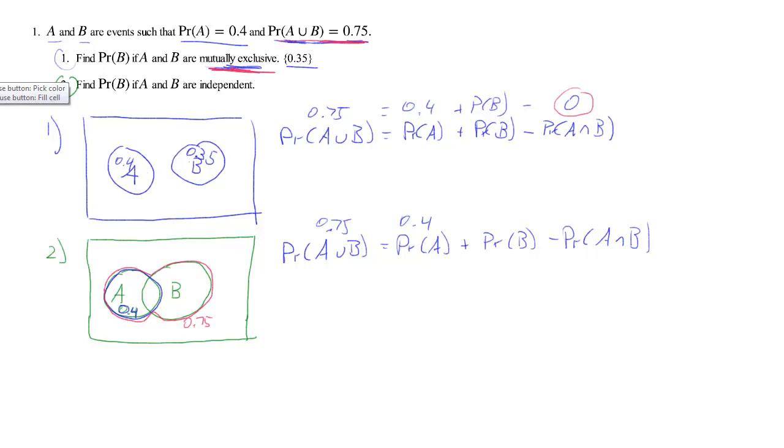Now this additional bit of information is that A and B are independent. That means that the probability of A and B, if they are independent, can be written as the probability of A times the probability of B. So that relationship comes from this information of independence.